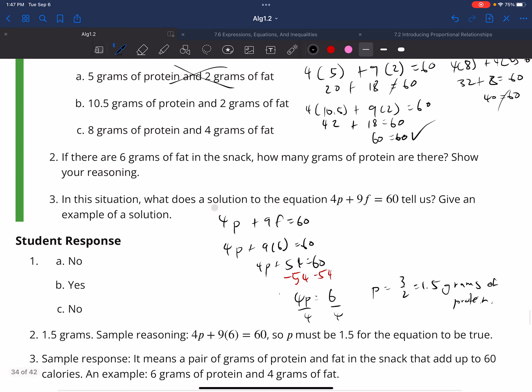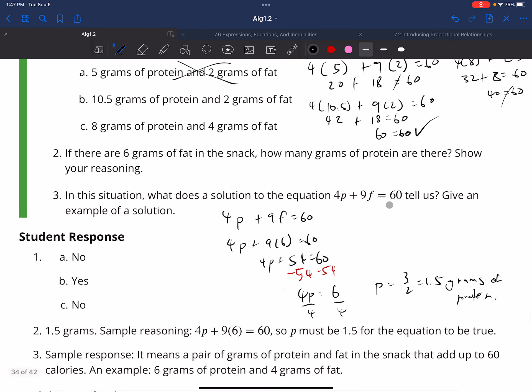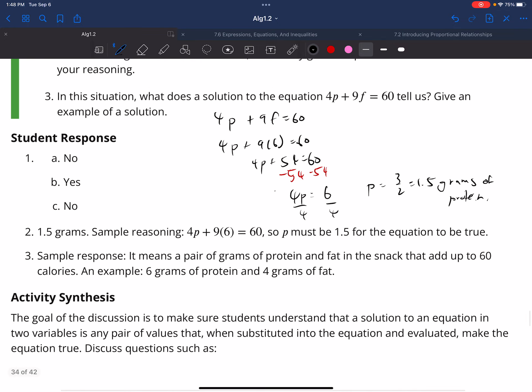And what does the solution to the equation tell us? The solution to the equation tells us that whatever combination of grams of protein and grams of fat will always equal to 60 calories. That's what that is saying.